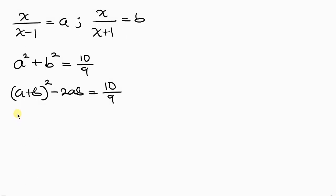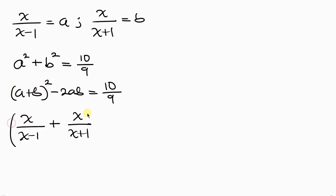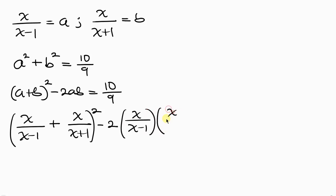Let's bring back our substitution. We have (a+b)², where a is x/(x-1) and b is x/(x+1), raised to the power of 2, minus 2 times a times b — that is, minus 2 times x/(x-1) times x/(x+1) — equal to 10/9.